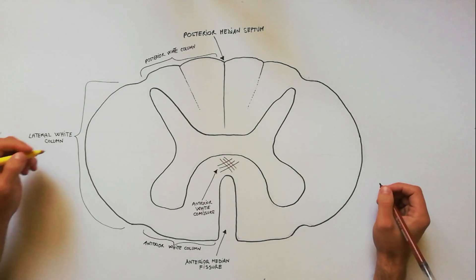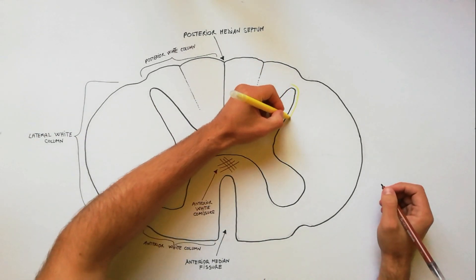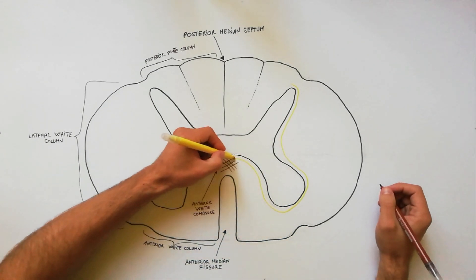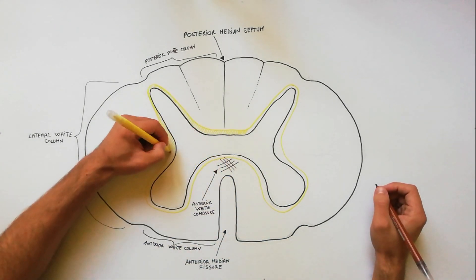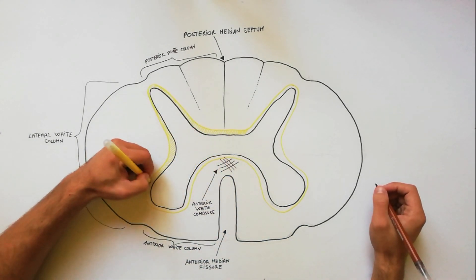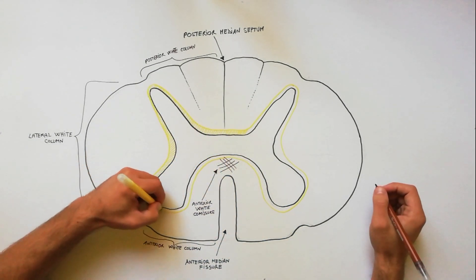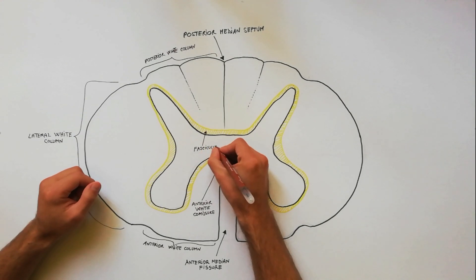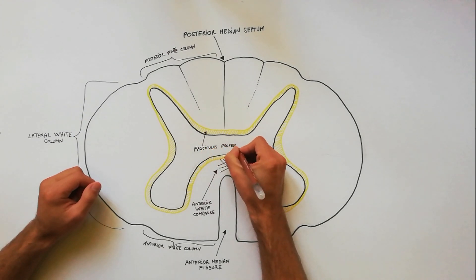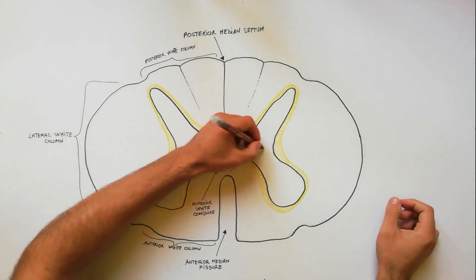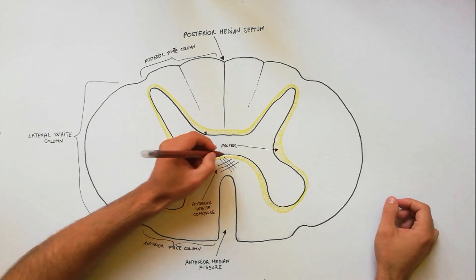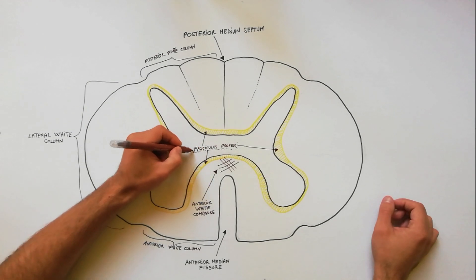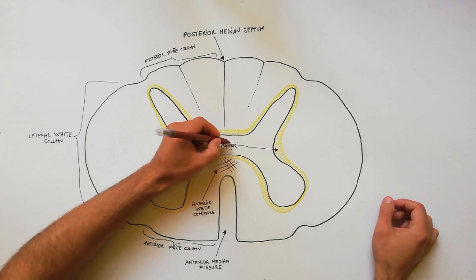Surrounding the gray matter, indicated with the yellow color, is the proper fasciculus, which is a group of short fibers — ascending and descending, and crossed and uncrossed — within the spinal cord.